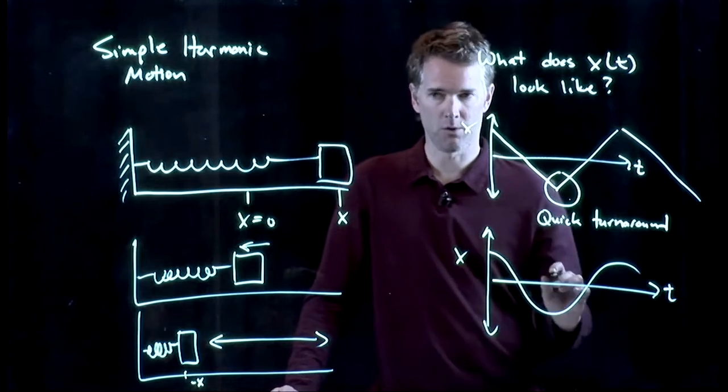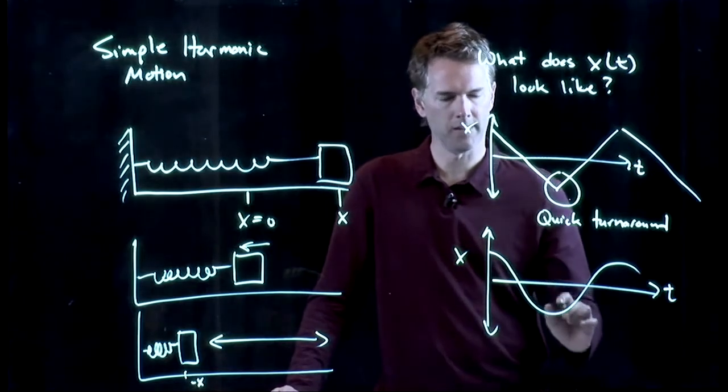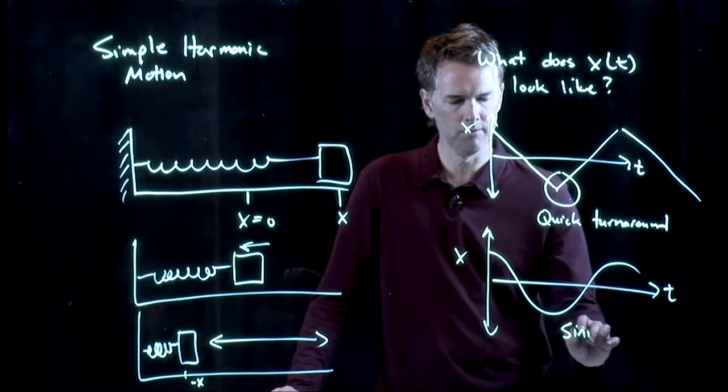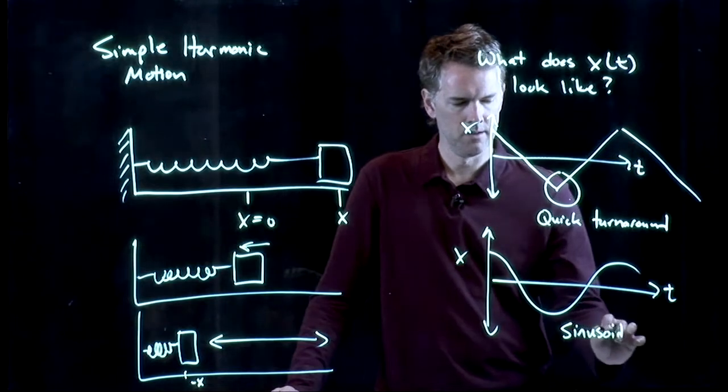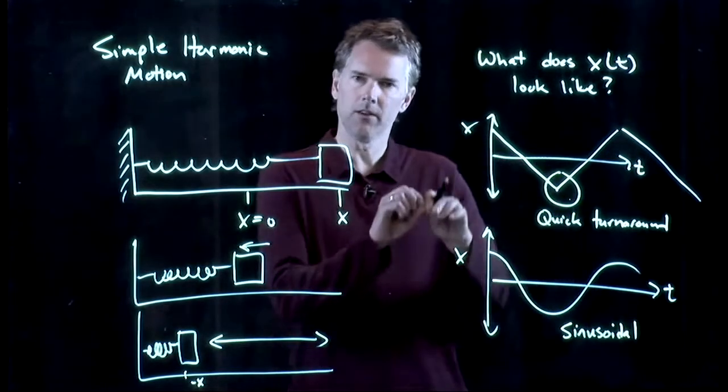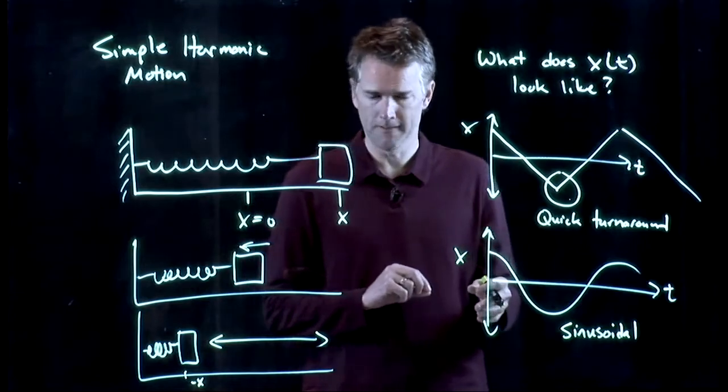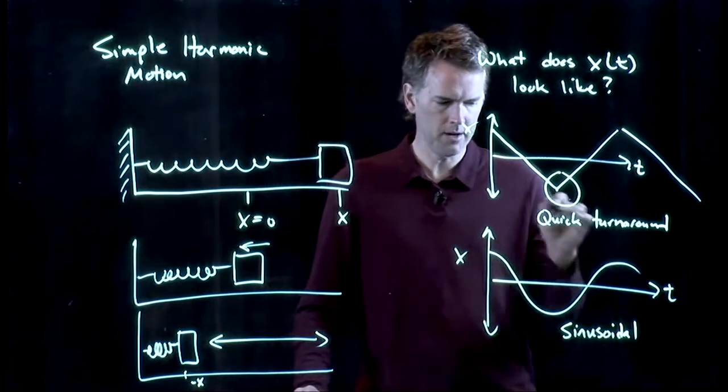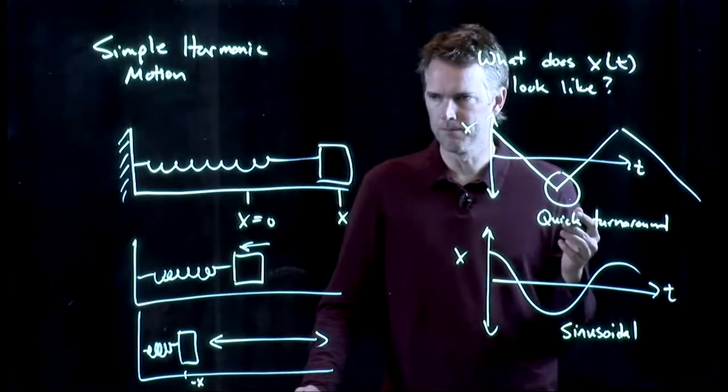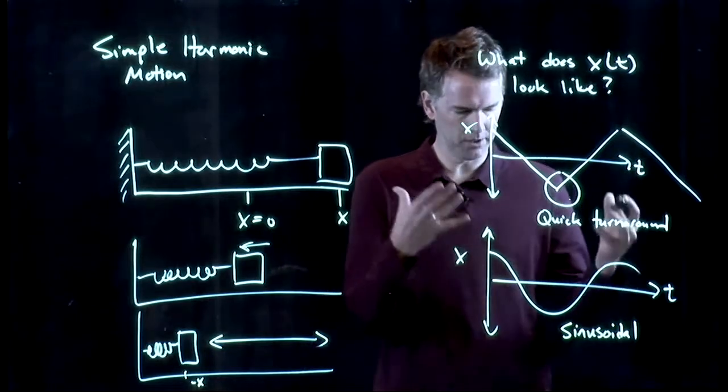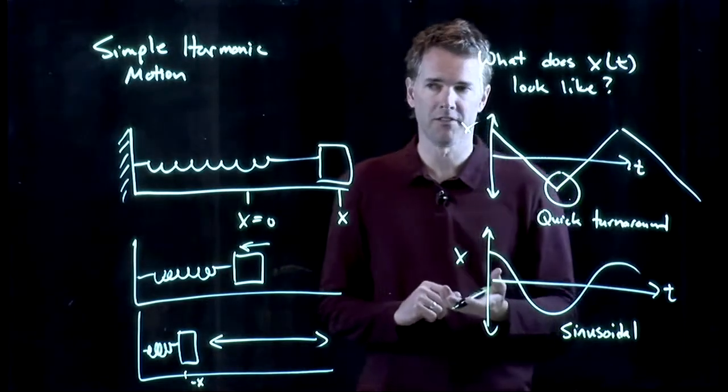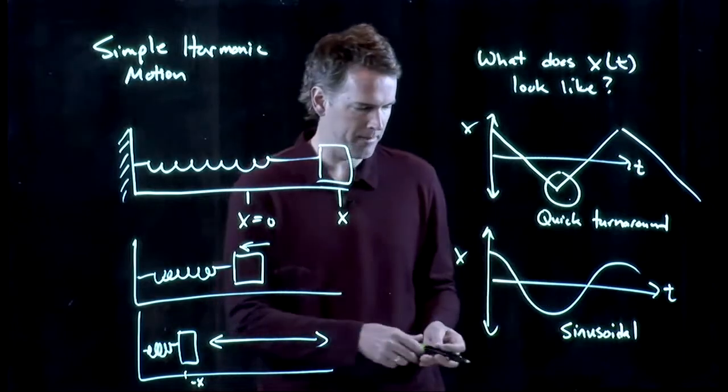This is, in fact, the correct curve. And this is a sinusoidal curve. Sinusoidal refers to anything that goes like a sine or a cosine. And this curve right here, in fact, looks like a cosine. Okay? So this is our guess. We're going to say it's got to look something like this. Let's see if we can understand how to get to that mathematically.